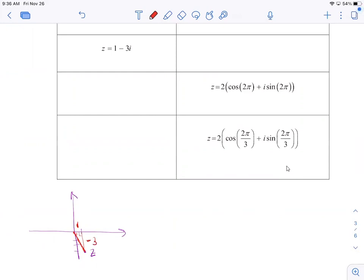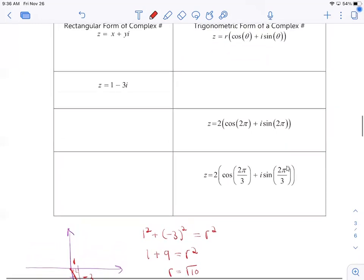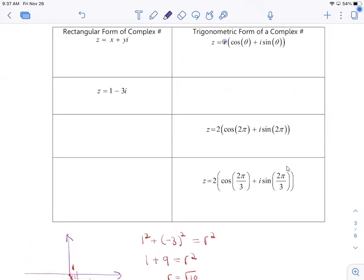So to find r, Pythagorean theorem. So 1 squared plus negative 3 squared equals r squared. So I have 1 plus 9 equals r squared. So then r is root 10. I would leave it like that. I can't break that up. If you can, you want to. You want to pay attention to instructions. So they might say round to a certain decimal or leave exact. So I'm just going to leave it as root 10.